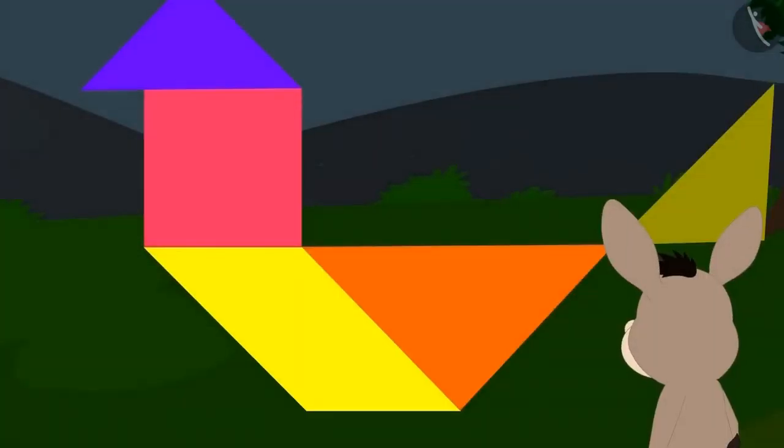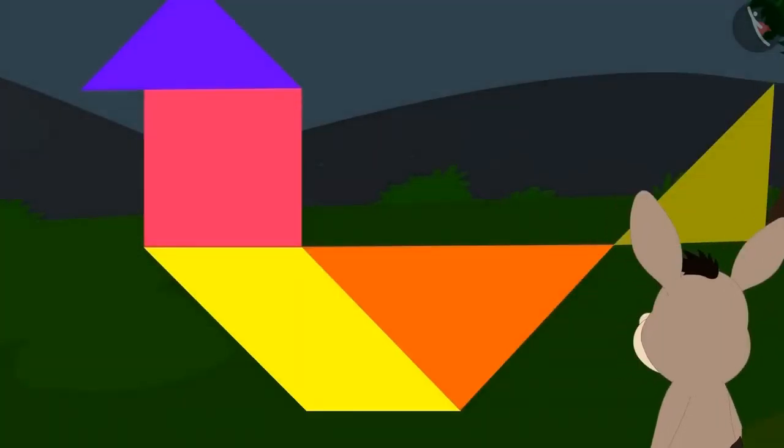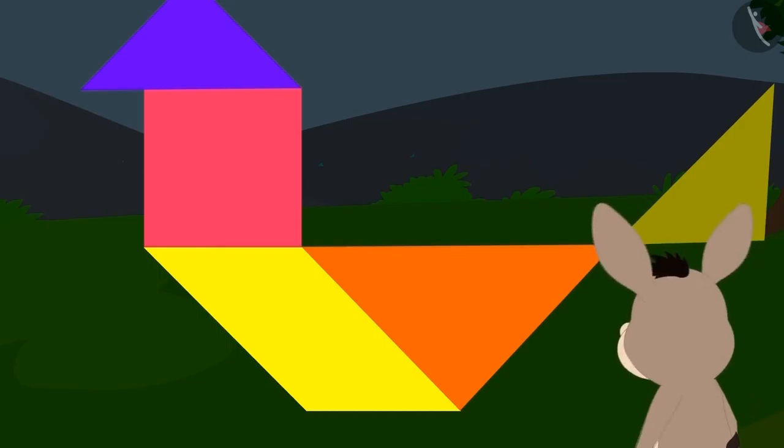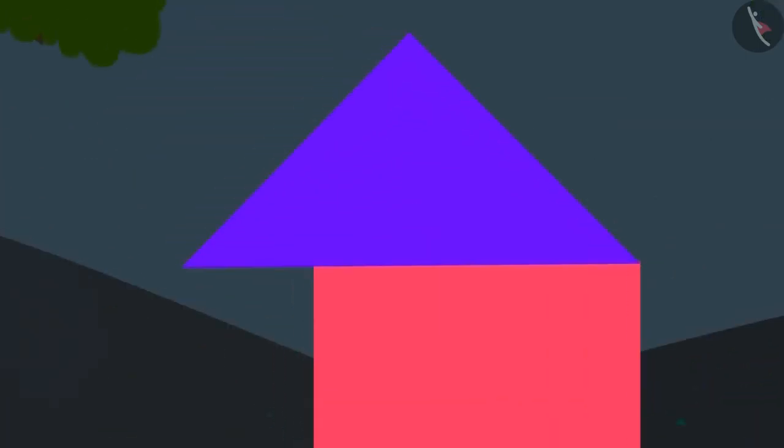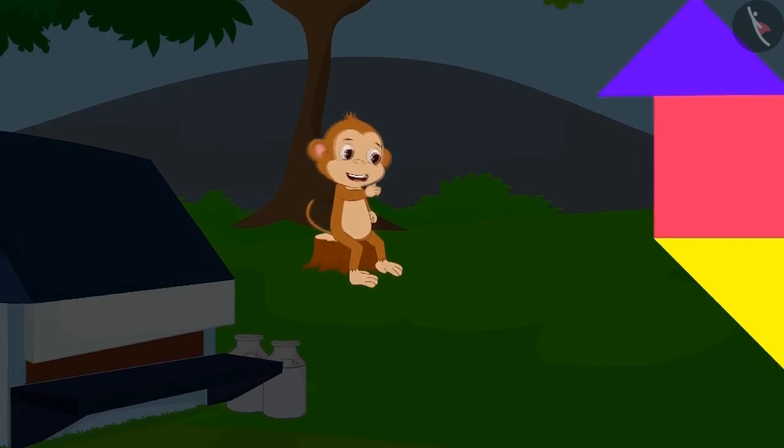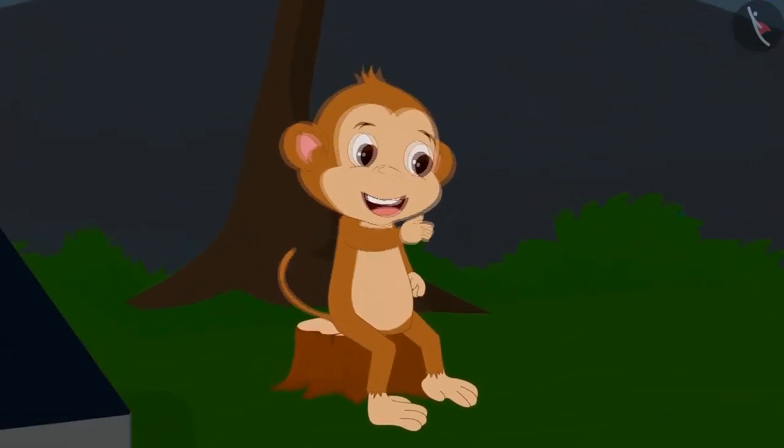When everybody had gone from there, Bholla quietly went behind the curtain. Do you know what he saw there? There was no giant bird behind the curtain. There was only a bird's shape made out of pieces of paper.